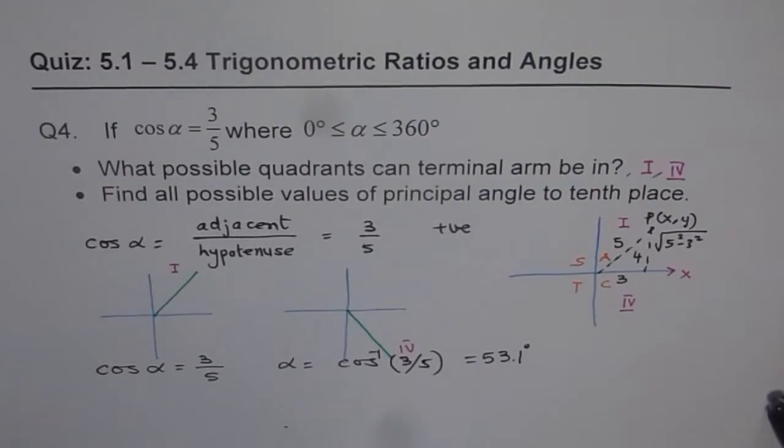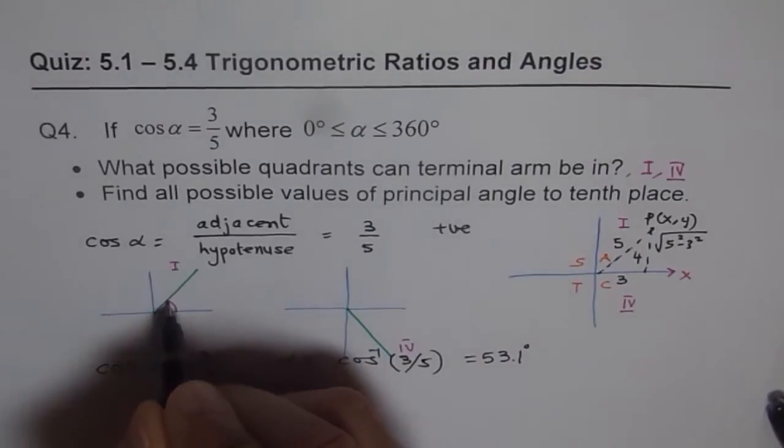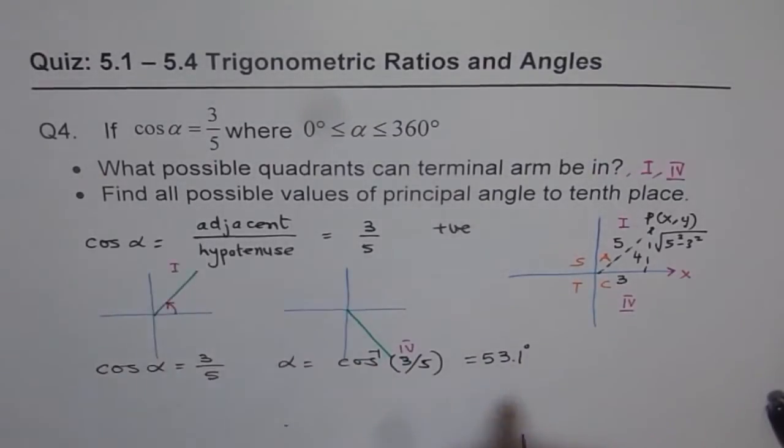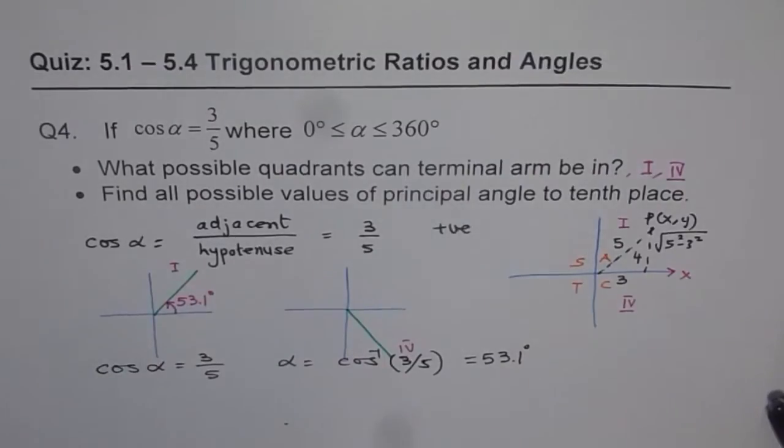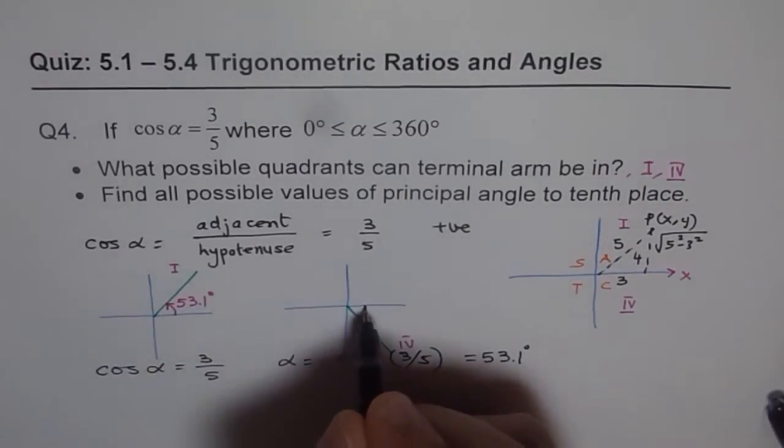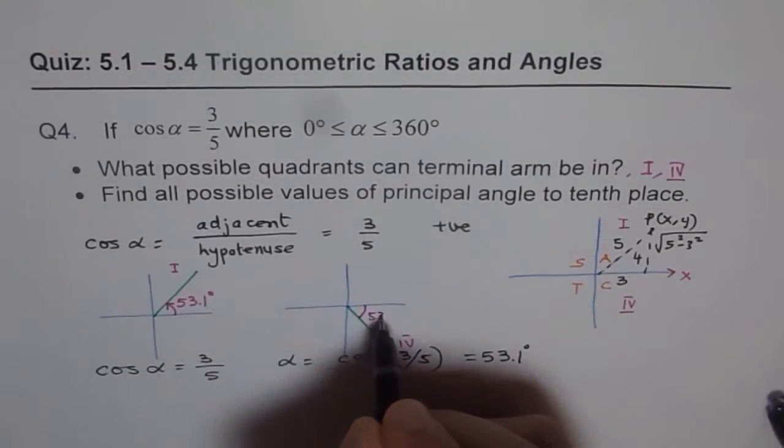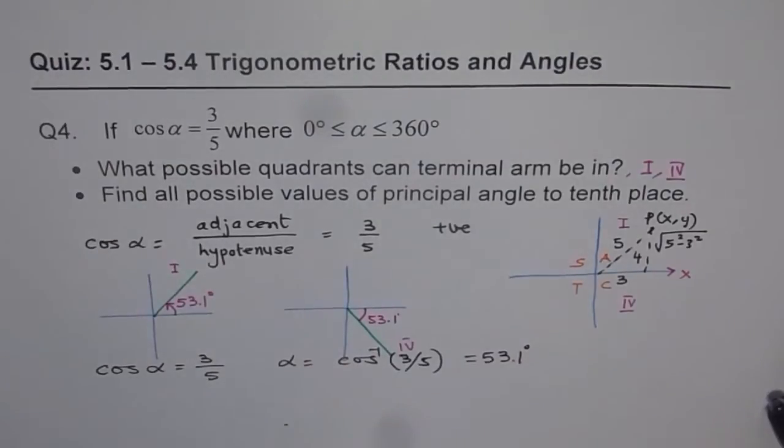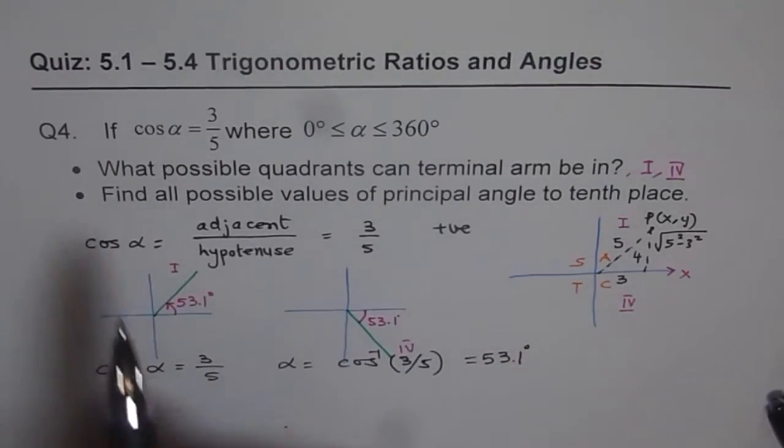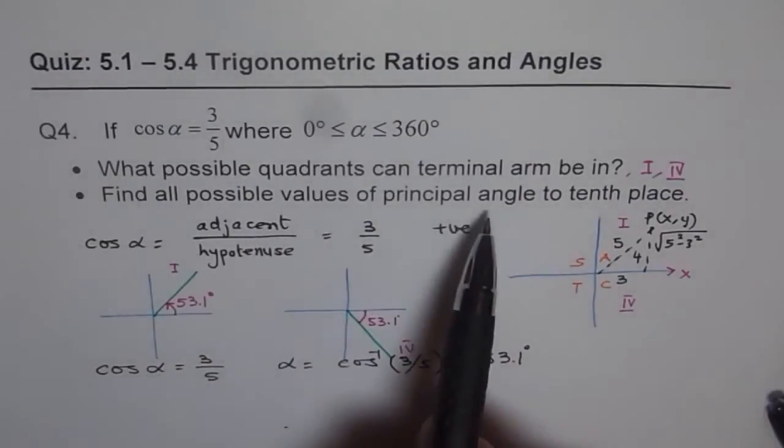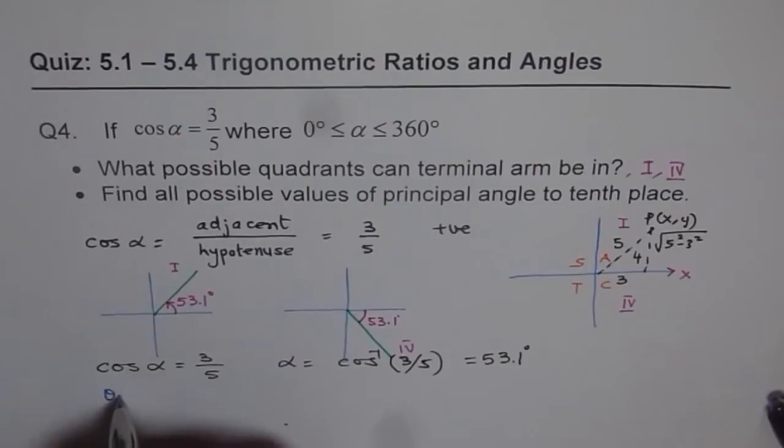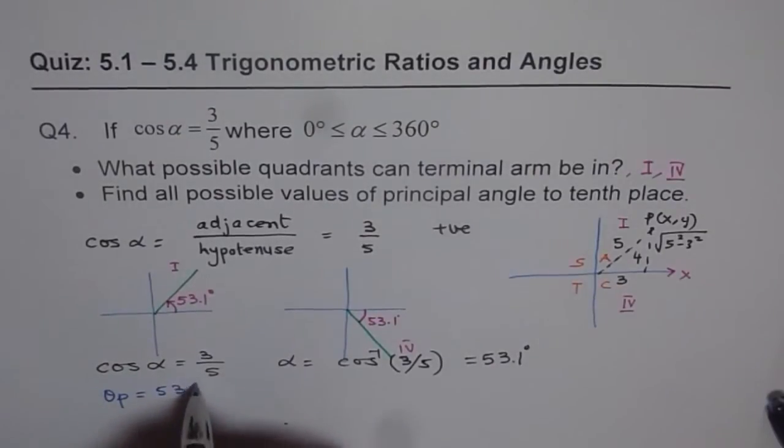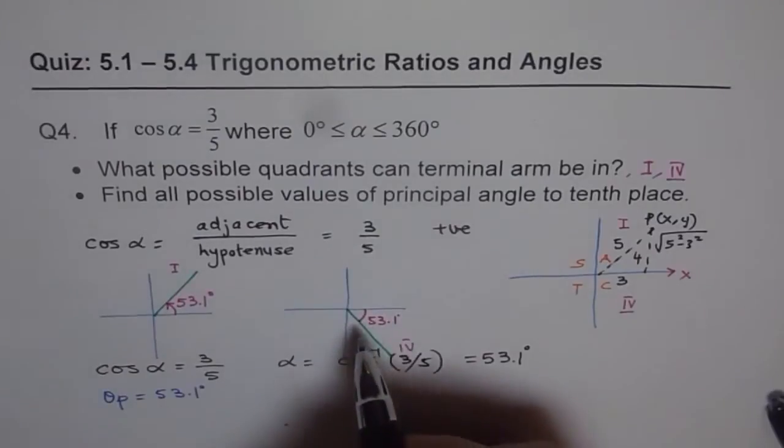So now we know that the angle alpha, for cosine to be 3 over 5, is 53.1 degrees. Now, so that means this angle is 53.1 degrees, that is what we know now, right? Now, the part 2 is, find all possible values of principal angle to tenth place. So here, principal angle theta p is equal to 53.1, same as related acute angle, and in this case, it is this much, correct?